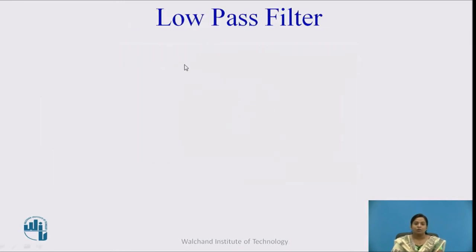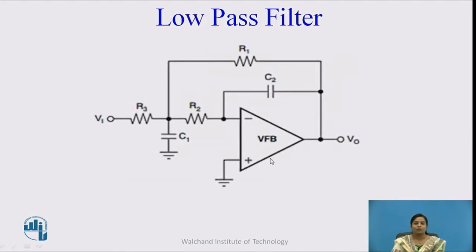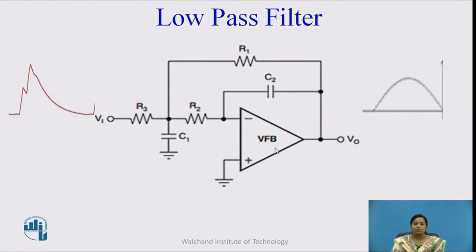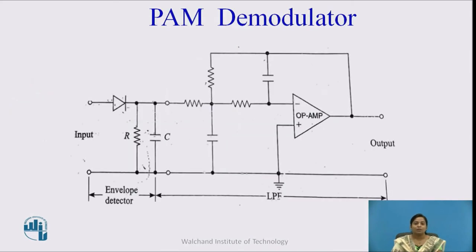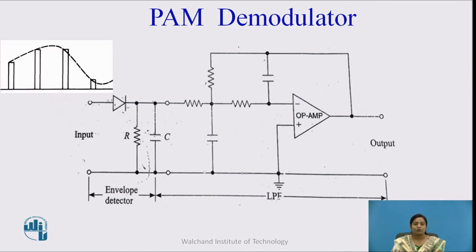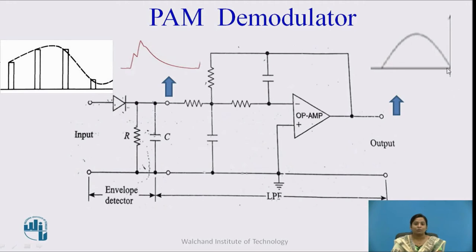The next circuit is a low-pass filter. In the low-pass filter, an op-amp circuit is used, which passes only lower frequency signals below the cutoff frequency for which it is designed, and attenuates the higher frequency signal. The op-amp circuit also amplifies the signal. At the output of the op-amp low-pass filter, we get the original signal. So in the PAM demodulator, first the PAM signal is input, the envelope detector gives the charging-discharging continuous signal, and the low-pass filter yields the original continuous time signal.